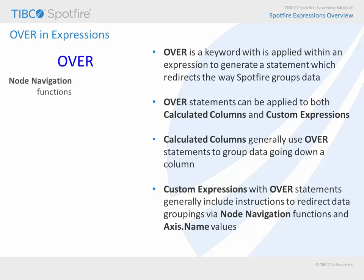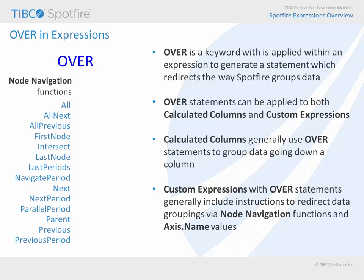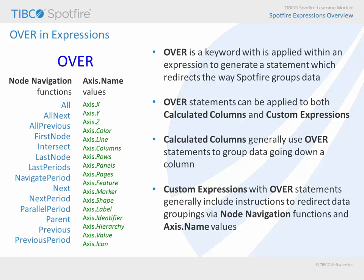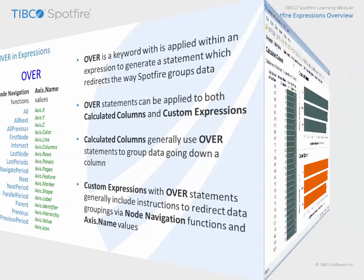Node navigation functions indicate specific areas of a hierarchy, while axis.name values indicate which property on a visualization is displaying that hierarchy. Let's take a look at a couple of examples where the over keyword has been applied in expressions, by returning to our demonstration in progress.